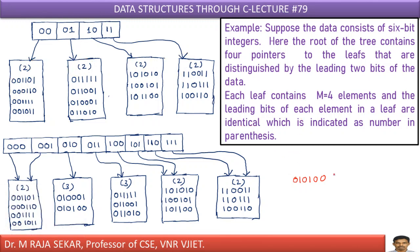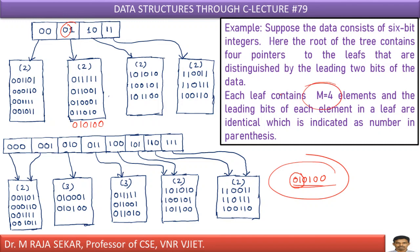Now, suppose we are interested in inserting the key 010100. What are the leading two bits? 0, 1 — so this pointer means I must keep it in the second leaf. But it is not permissible because only a maximum of four elements are allowed in a leaf node. If I keep this one there, I will have five elements. In that case, you have to expand the root directory — increase the size from 2 to 3.